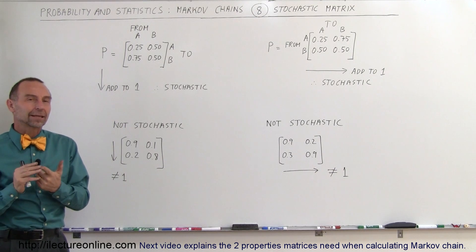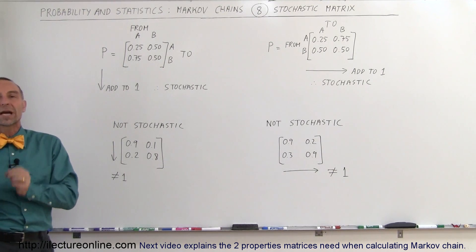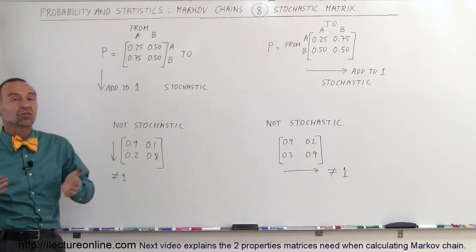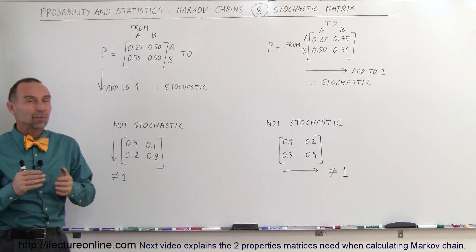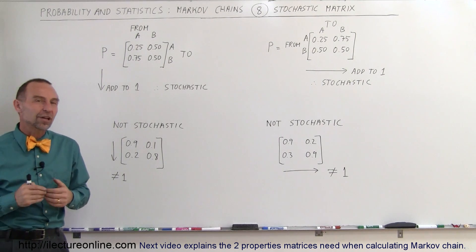For one, they must be stochastic. Secondly, they must be regular. So what does that mean? What is a stochastic matrix and what is a regular matrix when it deals with Markov chains?